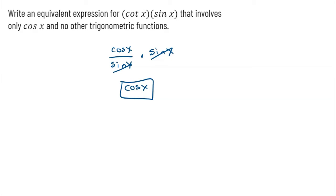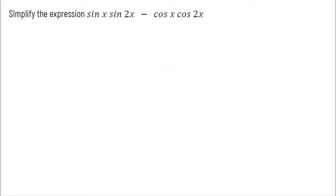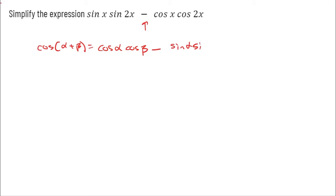Let's simplify the expression: sine of x times sine 2x minus cosine of x times cosine of 2x. Right away I recognize sine, sine, cosine, cosine with a minus in between — this is reminding me of the cosine addition formula, or the sum formula for cosine. That formula is: cosine of (alpha + beta) equals cosine alpha cosine beta minus sine alpha sine beta.